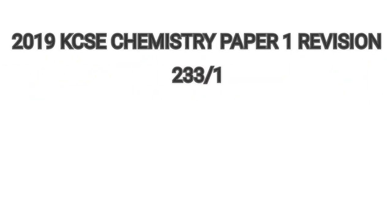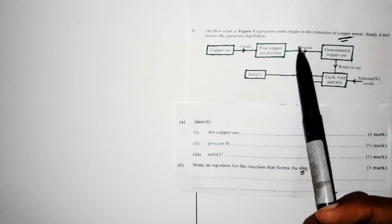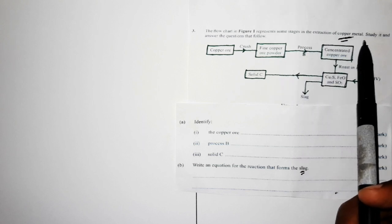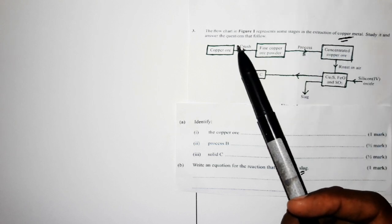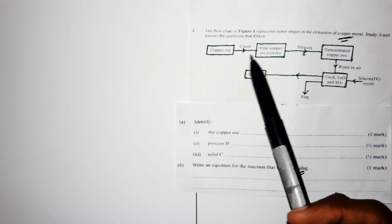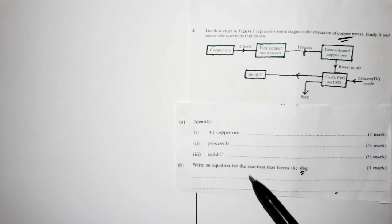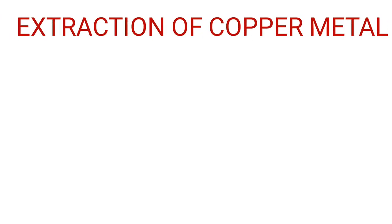Welcome. In this lesson I will discuss the 2019 KCSE chemistry paper 1. Here you have a question: the flowchart in figure 1 represents some stages in extraction of copper metal. Use it to answer the questions that follow. There is a need to discuss the extraction of copper metal. Copper is a metal, and what you need to note during extraction of copper are the following.